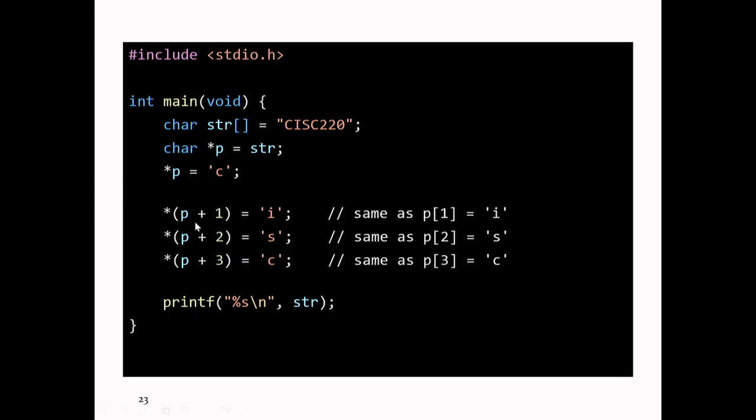When you write P plus 1, that just goes to the next element in the array. P plus 1 points at the 'I'. That would be P plus 6. We'll see more examples of pointer arithmetic later in the course. You can subtract pointers. You can write P++, which moves the pointer one to the right. You can write P--, which moves the pointer one position to the left. You can use the pointer to access or change elements of the array.